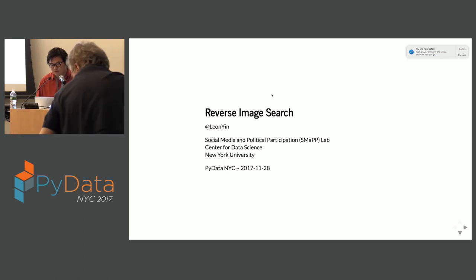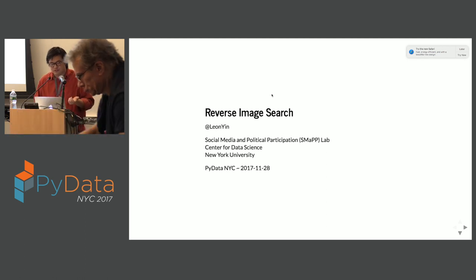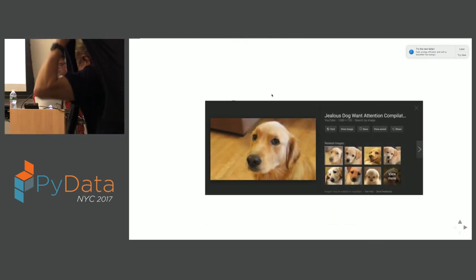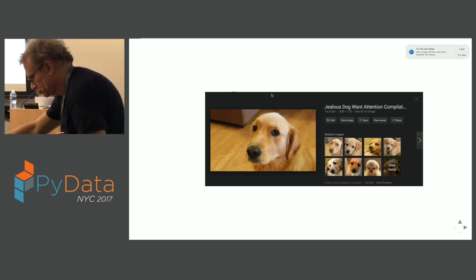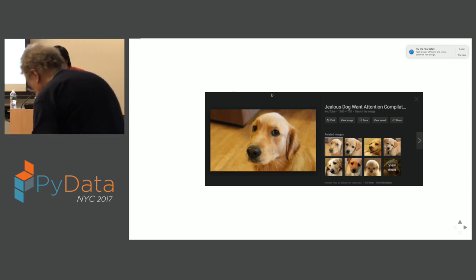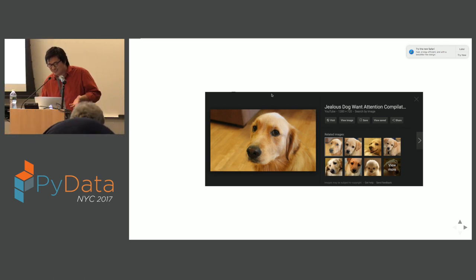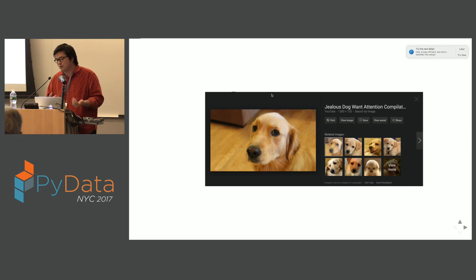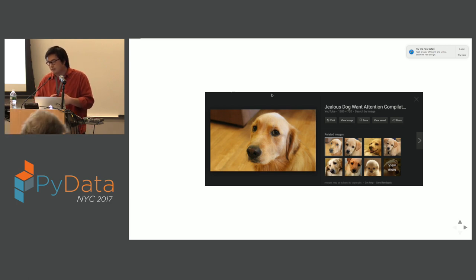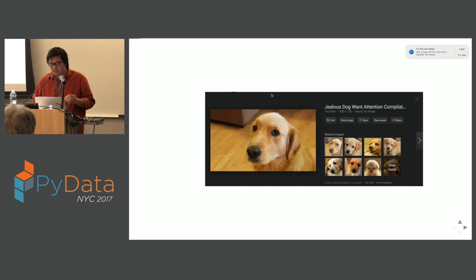What is a reverse image search? It's sort of like Google's similar images. Say I want to find other golden retrievers that look sad — you could just plug it in and you would get some similar results. This talk will be about how to reverse engineer something similar to that.